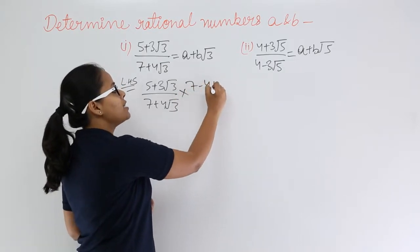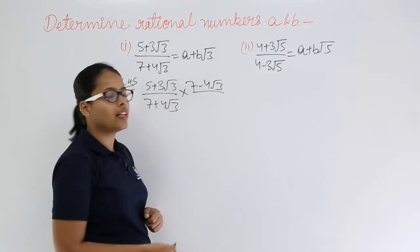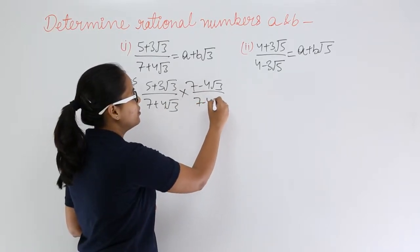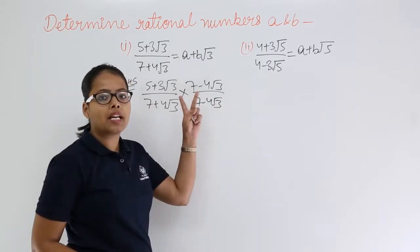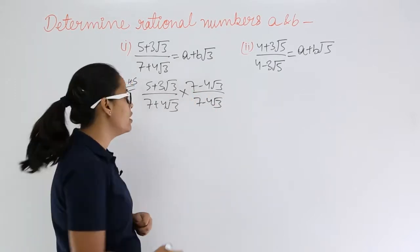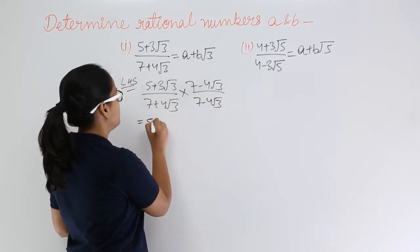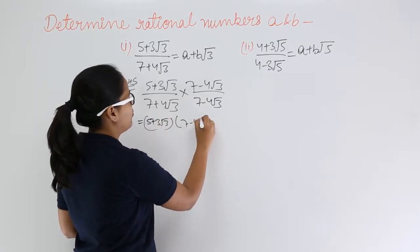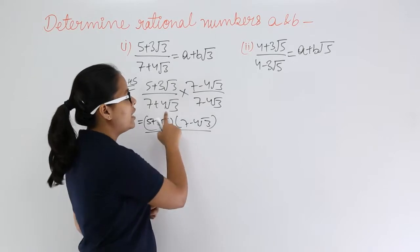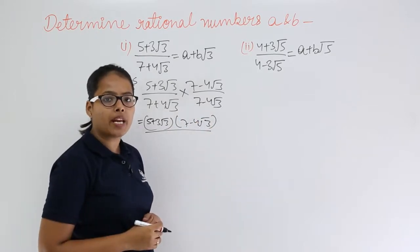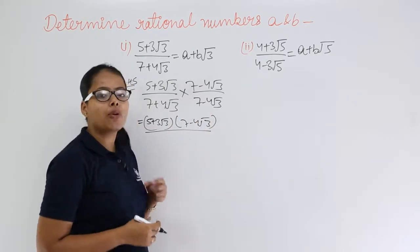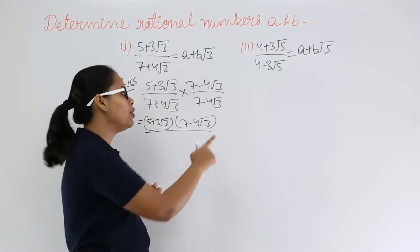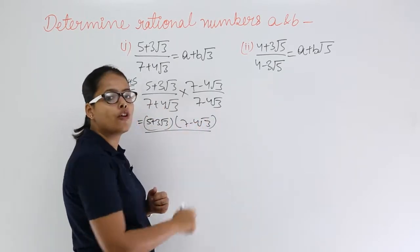Terms will remain as they are; only the sign changes from plus to minus. Now let's multiply the numerators as well as the denominators. You know that this makes the form of (a+b)(a−b), which gives a²−b², where the value for a is 7 and the value for b is 4√3.